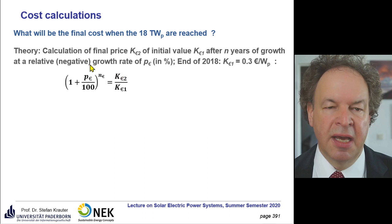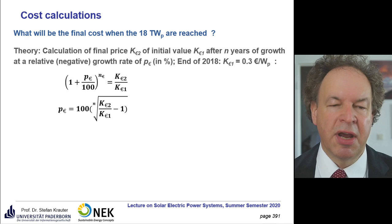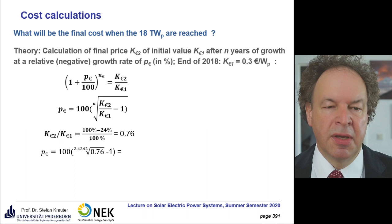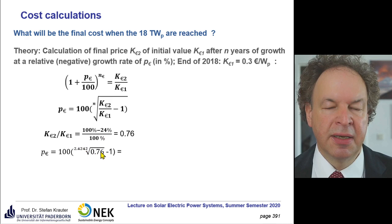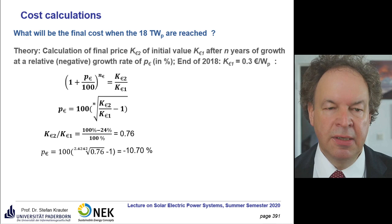We use the cost formula as presented. We calculate the cost regression rate in percentage. We have the cost digression rate of 24% per doubling of capacity. This doubling happens every 2.42 years. So we take the root accordingly for doubling and the 24% price reduction, and arrive at a yearly price reduction of 10.7 percent.